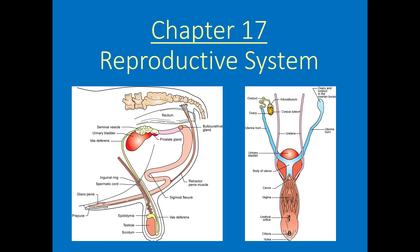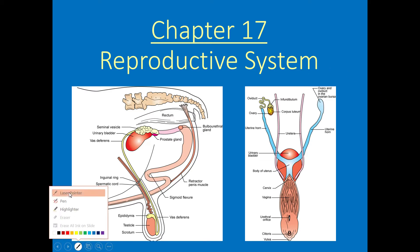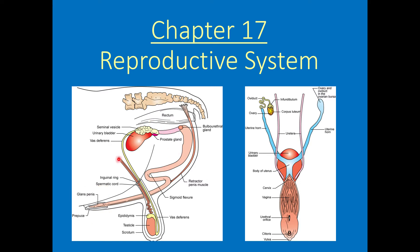Alright, hello everybody. Welcome to your online version of Chapter 17, The Reproductive System. As you can see over here on our title slide, we've got male reproductive system and our female reproductive system. We'll talk a little bit about these structures and also some physiology going on in these reproductive systems for this chapter.